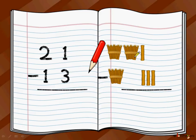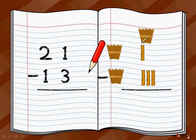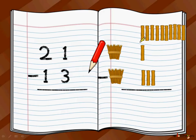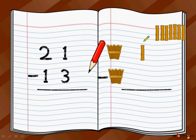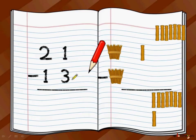The ones position says to its neighbor the tens position, 'Can you give me a bundle of yours?' The tens position says, 'Sure, I have two bundles, I can give you one.' So one bundle goes to the ones position. The ones position opens that bundle, which becomes 10 loose sticks. So now the ones position has 11 sticks total. From 11 sticks you can easily take away three sticks. After removing three, the remaining sticks come down — and there are eight sticks left.